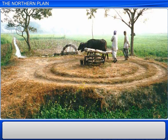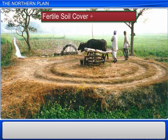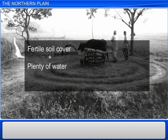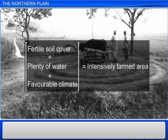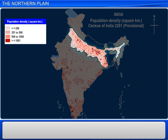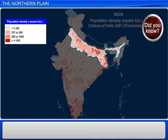The soil cover in this plain is rich and fertile, and water is found in plenty. Combined with a favourable climate for growing several major crops, the northern plain is one of the world's most intensively farmed areas. Therefore, it is not surprising that the northern plain is a very densely populated physiographic division of India and one of the most populated areas on earth.